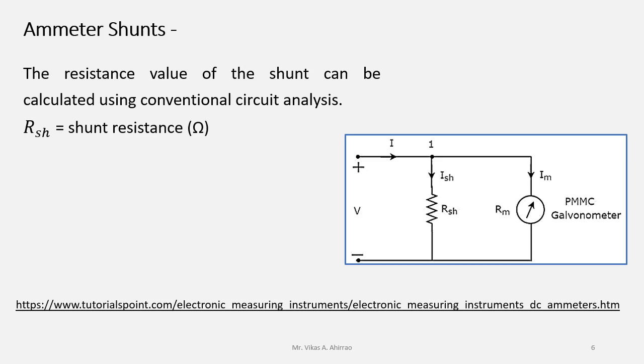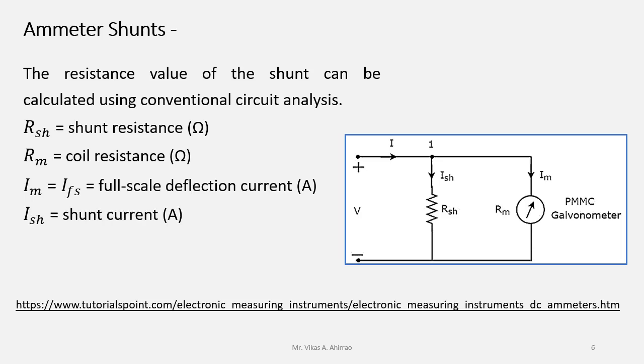Here RSH is the shunt resistance in ohms. Rm is the coil resistance. Im equals IFS which is the full scale deflection current. Ish will be the current which will flow through the shunt and I will be the current to be measured.